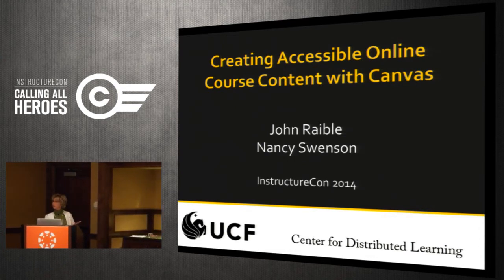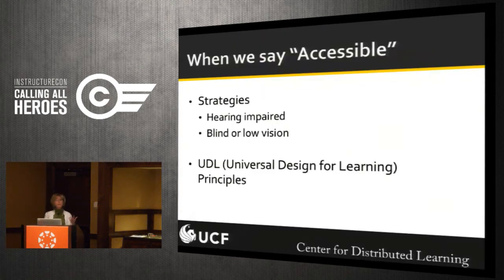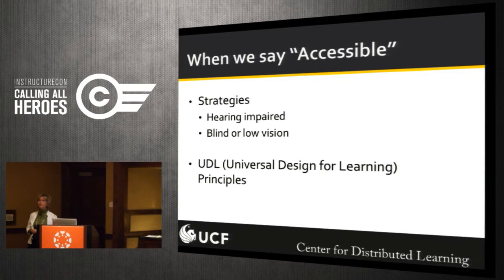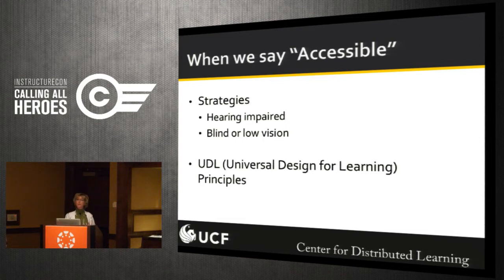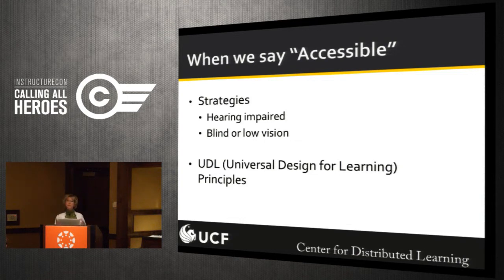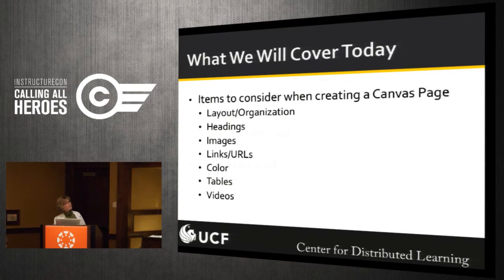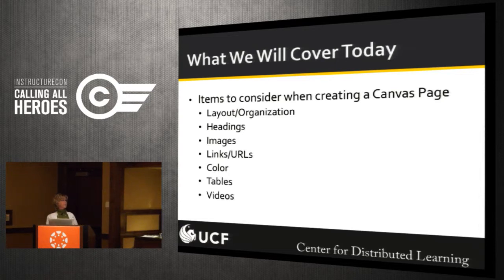We are from the University of Central Florida. When we say accessible content inside Canvas, we are talking about strategies to meet the needs of hearing impaired students or blind and low vision students — such as adding captions to videos, alternative text to images — but also applying universal design for learning principles, such as chunking your materials, layout and organization. Topics today: layout and organization, headings, images, links and URLs, color, tables, and videos.